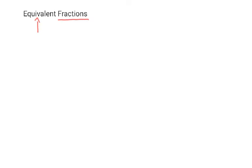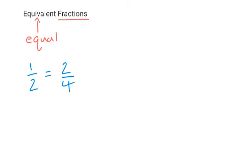Let's break down the term equivalent fractions. It involves fractions which are equal, so even though they don't look the same they are in fact equal, and that's something you have to remember. For example, 1 over 2 is equal to 2 over 4, so 1 over 2 and 2 over 4 would be considered equivalent fractions — they are both equal to one another even though they look different.